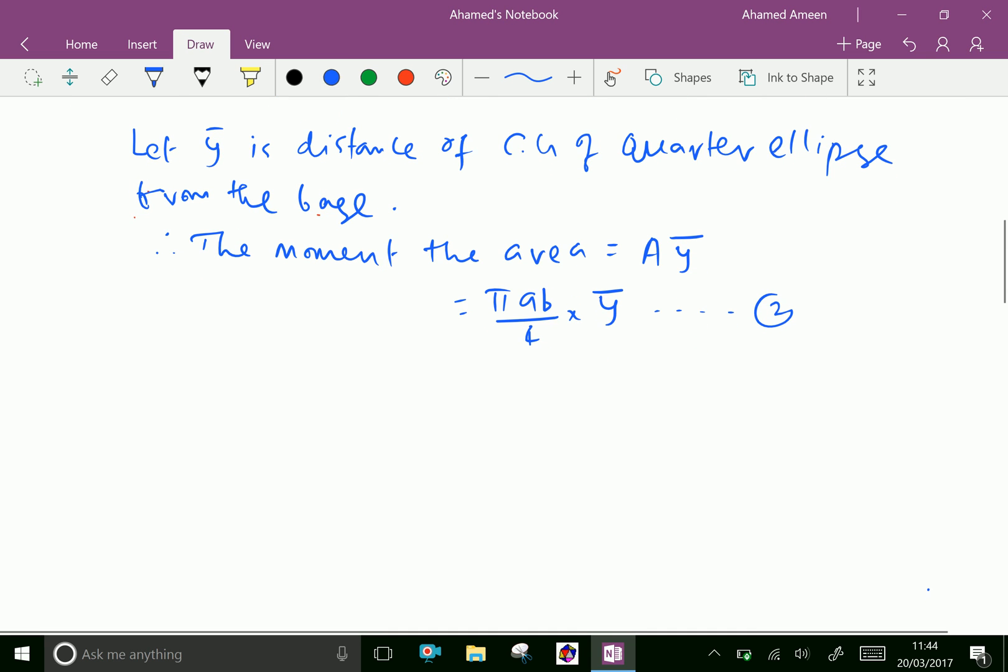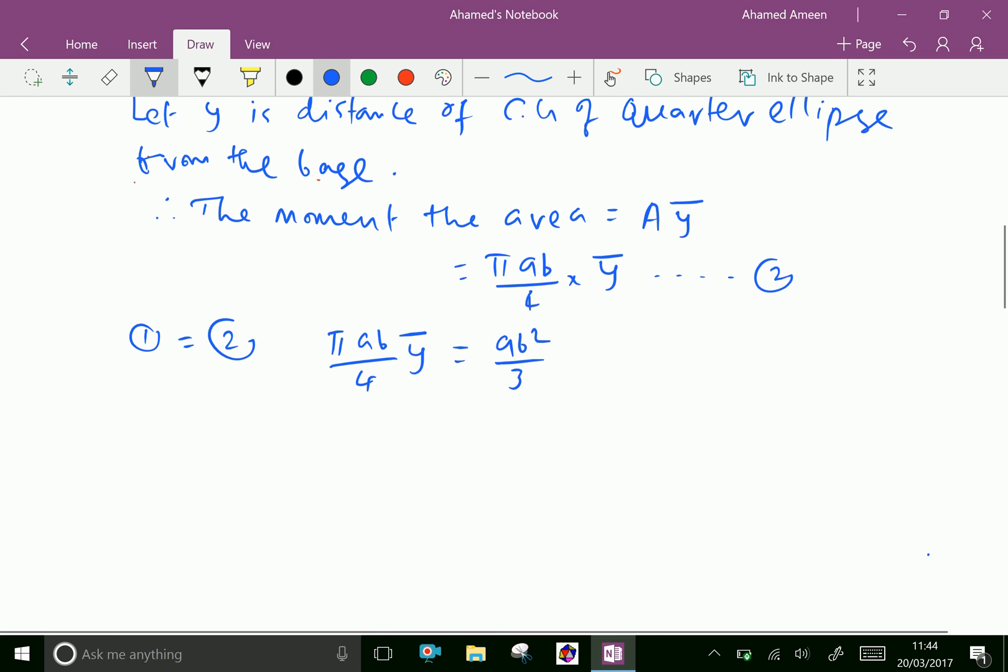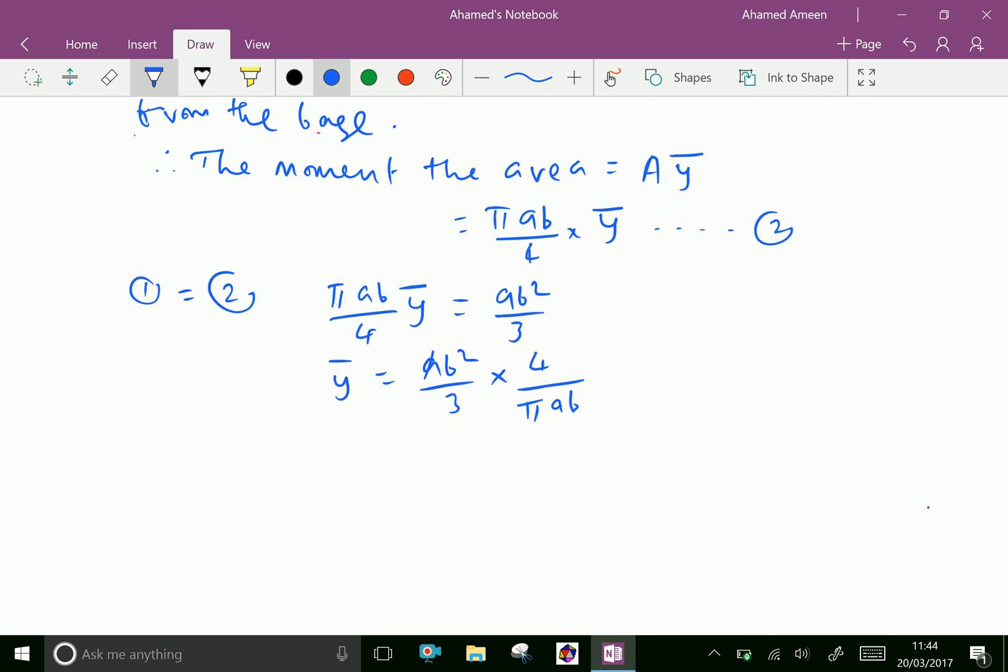By equating equations 1 and 2, because both represent the same moment of areas, π ab over 4 times ȳ equals a b squared over 3. Now ȳ equals a b squared over 3 multiplied by 4 over π ab. After canceling a and b, which equals 4b over 3π.